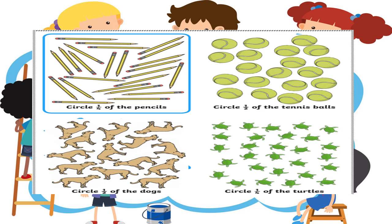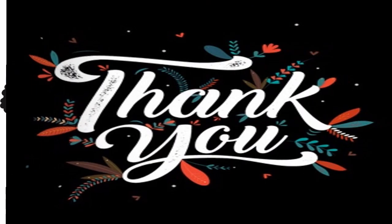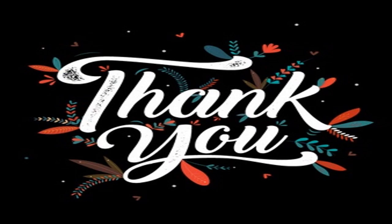Here is one more interesting worksheet. Circle one-fourth of the pencils — that means circle one quarter. Then circle half of the tennis balls. Complete the worksheet by identifying where to circle halves and where to circle quarters. Stay home, stay safe. Allah bless you, my dear students. Thank you.